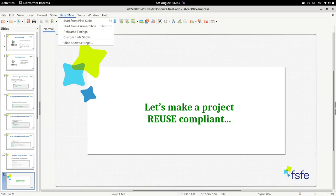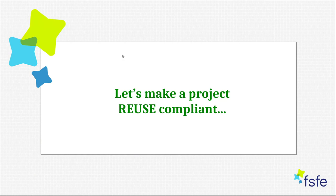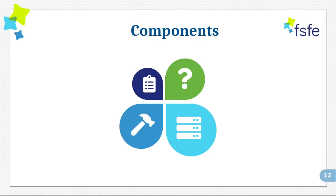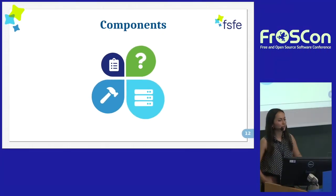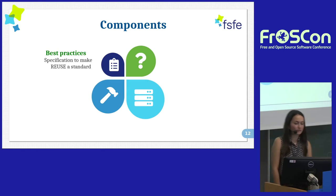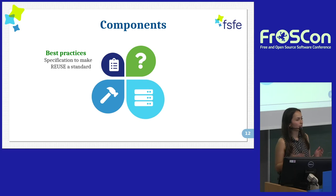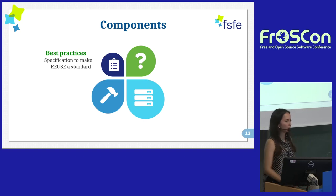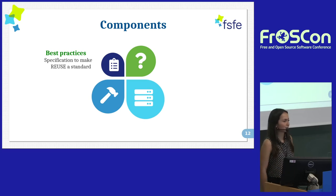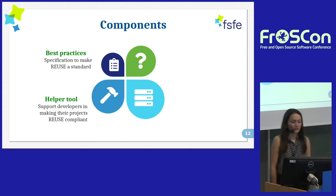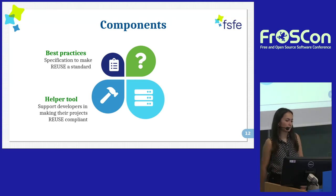This was a quick and simple example. I know that in reality it's not always that easy, but it was meant to show you how the tool works. You could also see that we saved a lot of time. The components of Reuse are this set of best practices: the specifications, the licenses directory, and adding headers to every single file. We are aiming to make Reuse a standard — the more projects implement Reuse, the easier it will become to identify this information and implement it as standard practice. We also have the helper tool that supports developers in making their projects Reuse compliant.